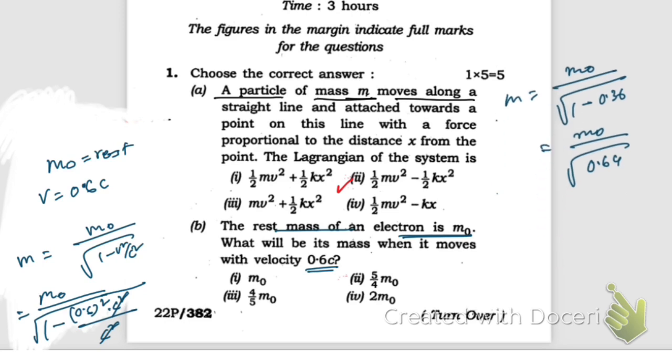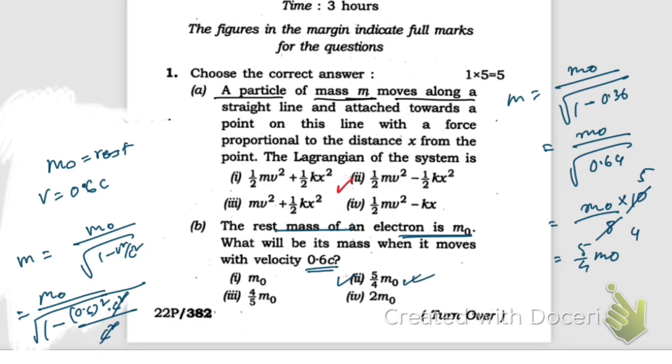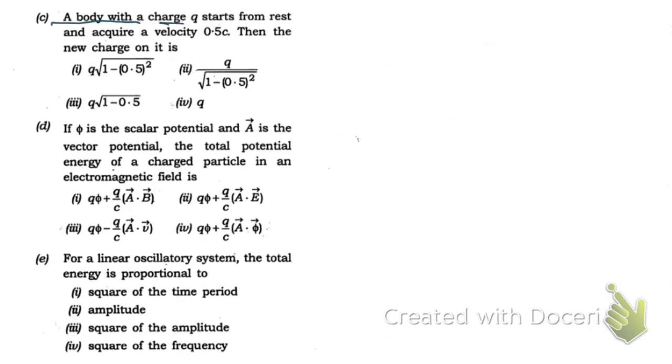That's gonna equal m₀ divided by root of one minus 0.36, which is 0.64. That equals m₀ by 0.8, which we can write as 10 divided by 2×4 and 2×5. So we get 5/4 m₀. This is the correct answer.